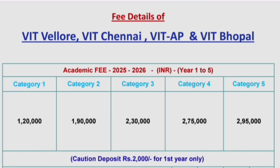Students should also know the fee structure for different programs in different campuses. For academic year 2025-26 there are 5 categories — earlier there were only 3, but this year it is 5. Students with excellent marks get Category 1 at 1 lakh 20,000 per year, approximately 6 lakhs for the 5-year program. Category 2 is 1 lakh 90,000 per year (approximately 9.5 lakhs total). Category 3 is 2 lakh 30,000 per year. Category 4 is approximately 2.75 lakhs per year. Category 5 is just under 3 lakhs at approximately 2.95 lakhs per year.